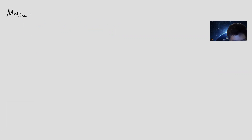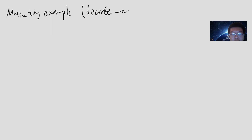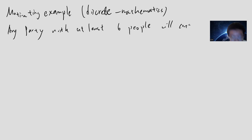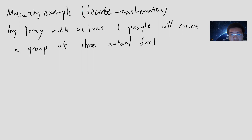Before we start, let's look at some motivating examples. I think this is the discrete mathematics, or basically you can maybe see some brain teaser or something like some kind of interview question. So: any party with at least six people will contain a group of three mutual friends or a group of three mutual non-friends.